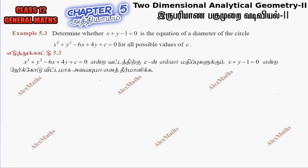Hi students, this is Alex here. Example 5.3: Determine whether x plus y minus 1 equal to 0 is the equation of the diameter of the circle — for all possible values of c.